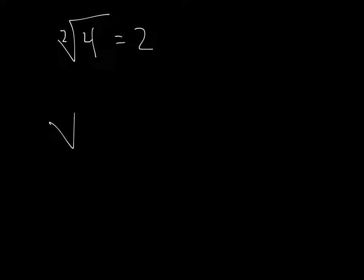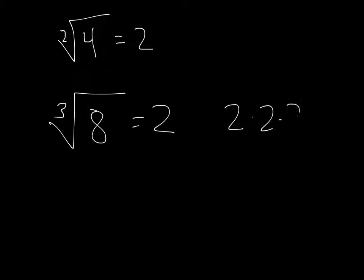What if I have a cube root? Let's think of a number like 8. The cube root of 8 is 2 because 2 times 2 times 2 is 8. It's asking what number times itself times itself equals 8. These function very similarly to square roots when we simplify them, with one interesting caveat.